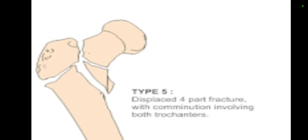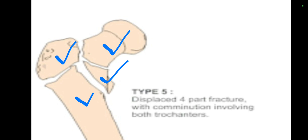Now Type 5. In Type 5, we have a four-part fracture — first, second, third, and fourth parts. So Type 5 includes a four-part fracture, while Types 3 and 4 have only three-part fractures, and Types 1 and 2 are two-part fractures.